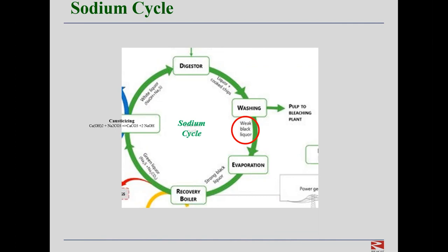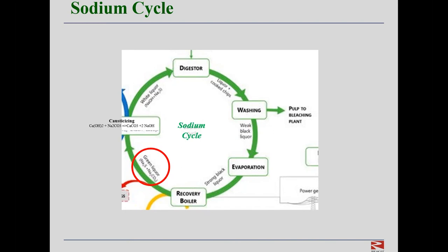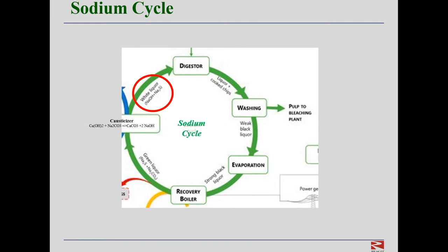The sodium cycle has three key liquids, more properly called liquors. Washing the fibrous chips after digestion creates the black liquor. The black liquor is converted into green liquor by dissolving the smelt that comes out of the black liquor recovery boiler. Then in the causticizer, the green liquor is changed into white liquor, which is the cooking liquor in the wood digester. So the solutions in the sodium cycle are: black liquor to green liquor to white liquor.